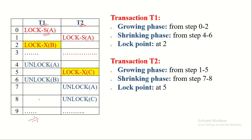Let us take an example to see whether two-phase locking protocol is applied or not. In this schedule, there are two transactions, T1 and T2. Transaction T1 is in the growing phase because it acquires all its locks at the beginning, from step zero to step two. Since it acquires no more locks after that, this point is known as its lock point.